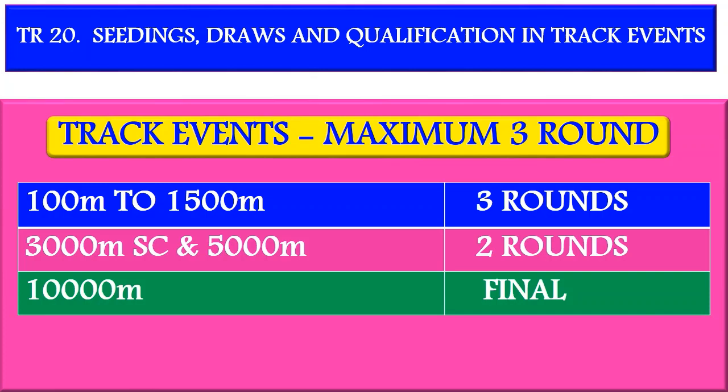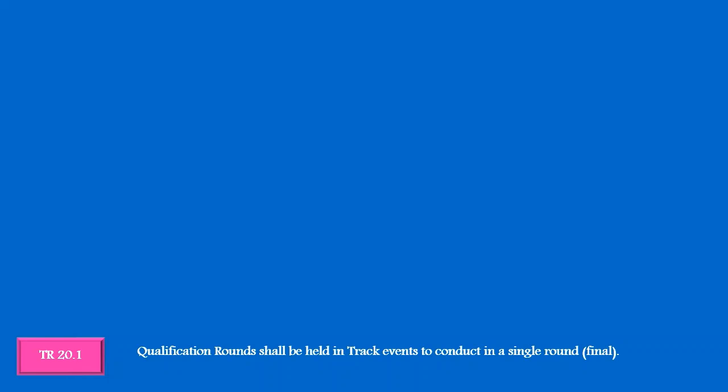What does the rule describe about seedings, draws, and qualification in track events? Technical Rule 20.1 says qualification rounds shall be held in track events in which the number of athletes is too large to allow the competition to be conducted satisfactorily in a single round final.